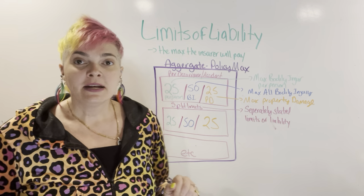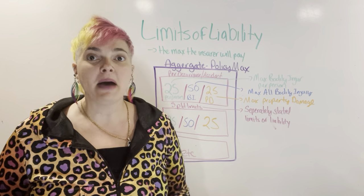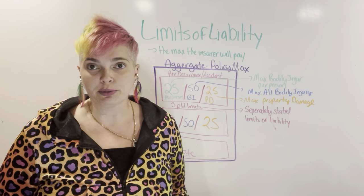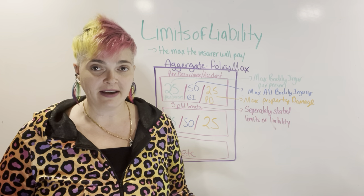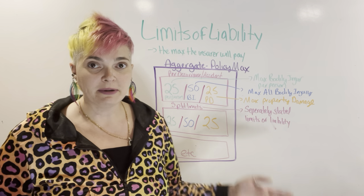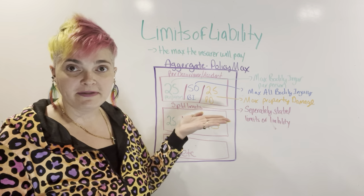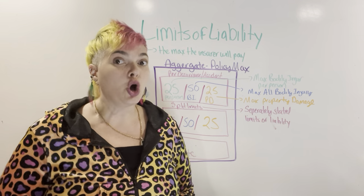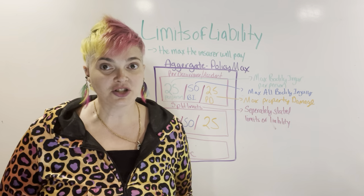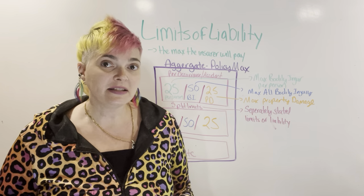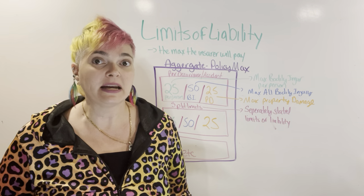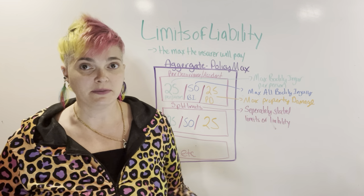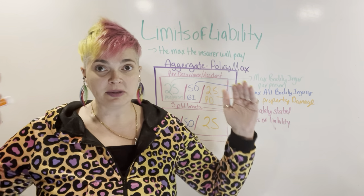The first concept is the aggregate. The aggregate is the policy maximum. So when you buy insurance, they'll tell you we'll cover $25,000 per person, $50,000 per accident, $25,000 property damage. Our policies are not limitless — your auto policy probably has like a million or $2 million limit. That's the ultimate limit.